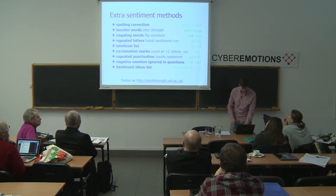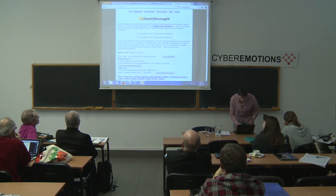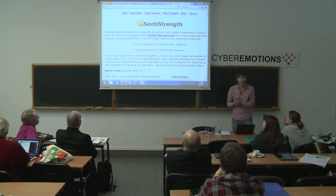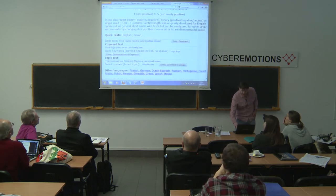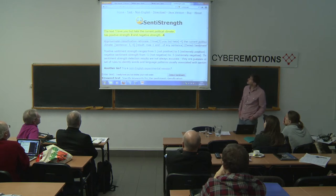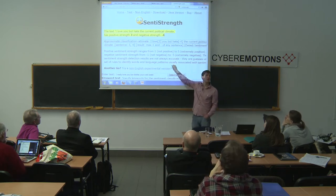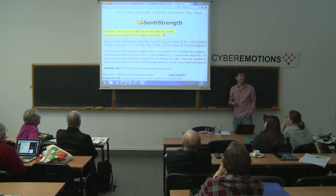Would you like to see SentiStrength in action and see if you can beat it? This is the website for SentiStrength — you can try it out live. The default example is 'I love you but hate the current political climate.' If you click 'detect sentiment,' it gives a score: positive sentiment three, negative sentiment minus four. It's picked up that 'love' is a plus three word and 'hate' is a minus four word, which is where the overall score comes from.